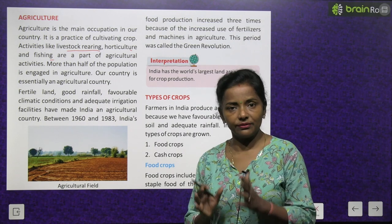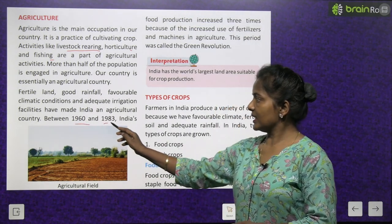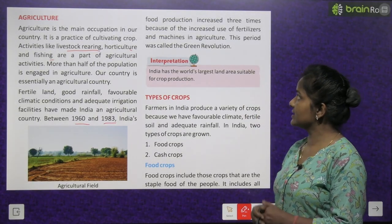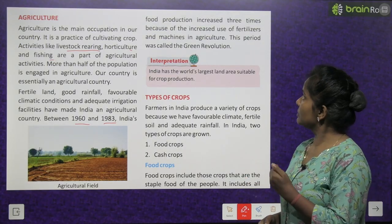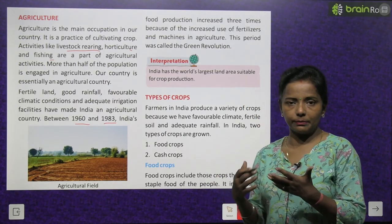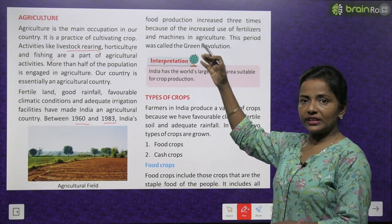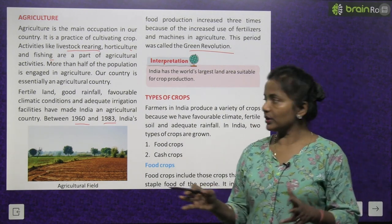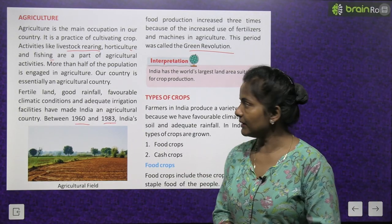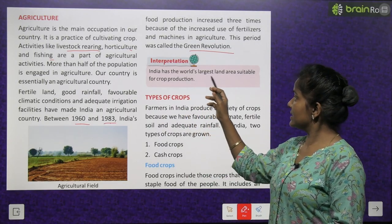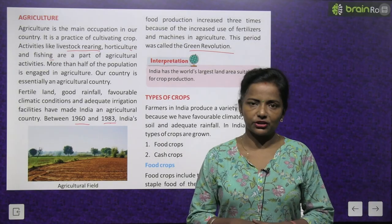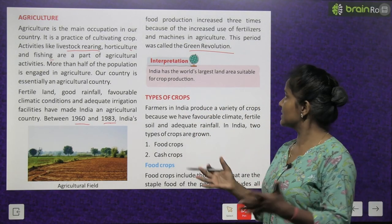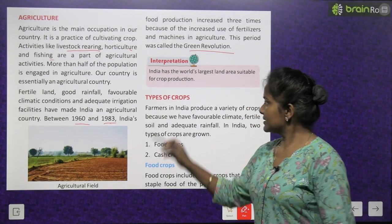Between 1960 and 1983, India's food production increased three times because of the increased use of fertilizers and machines in agriculture. This period was called the Green Revolution. India also has the world's largest land area suitable for crop production.